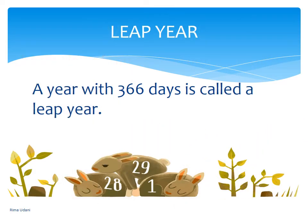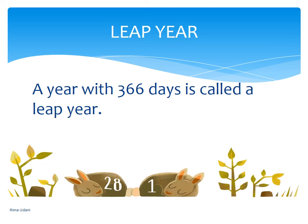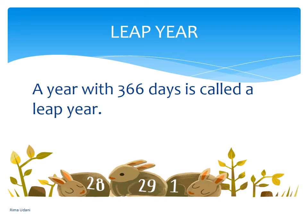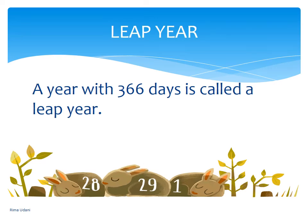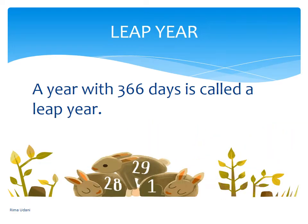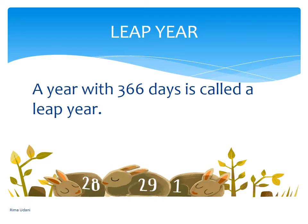The six hours saved every year are added to make one full day — that is 24 hours — over a span of four years. This surplus is added to the month of February, so every fourth year February has 29 days instead of 28. Such a year with 366 days is called a leap year.